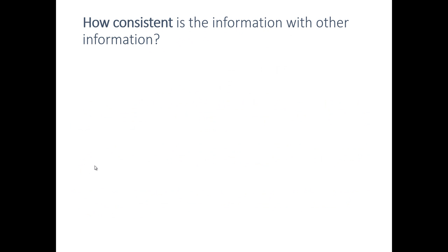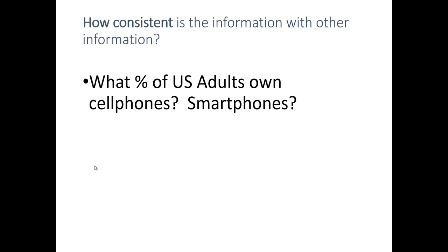When we're looking at secondary data, we can often find more than one source of information that provides useful insights. What we need to ask then is: how consistent is the information with other secondary data? For example, let's imagine we want to answer the following question: what percent of U.S. adults own cell phones? What percent own smartphones? And in particular, what has been the last three-year trend of cell phone and smartphone ownership?